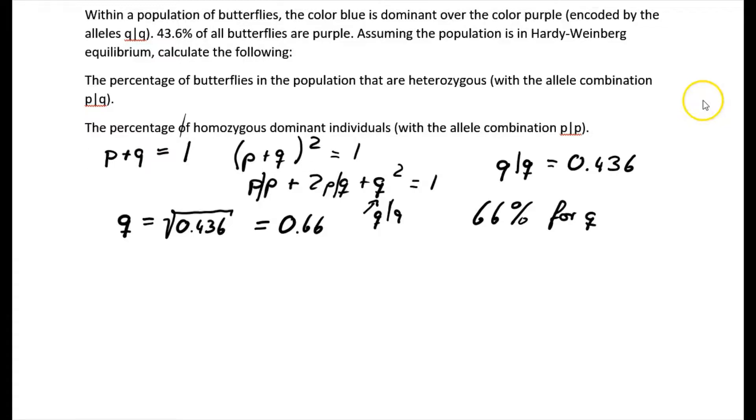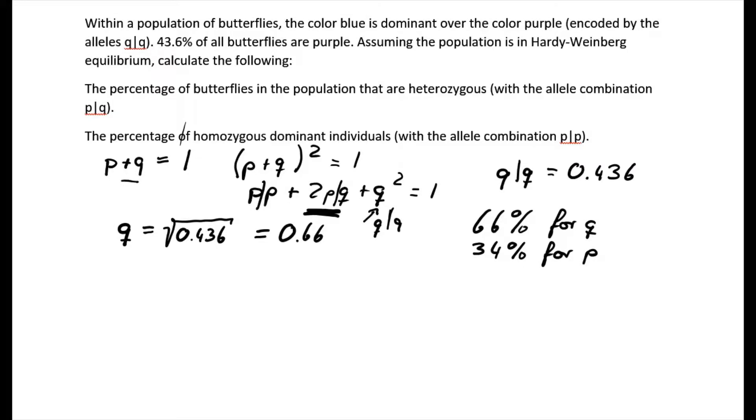Now we can use this relationship here, P plus Q, and find that P would be 34% for P.